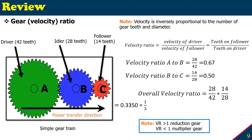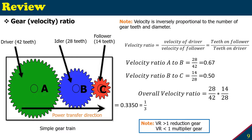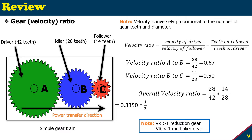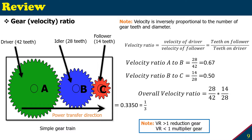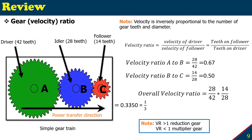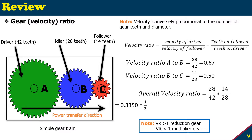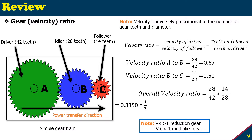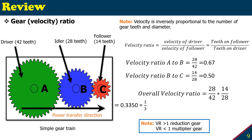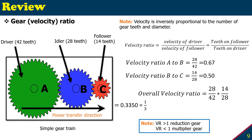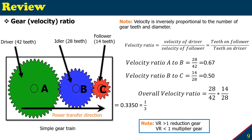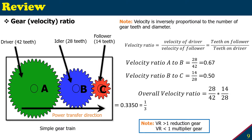Notice: if your velocity ratio is greater than 1, it's a reduction gear. If the velocity ratio is less than 1, it's a multiplier gear.